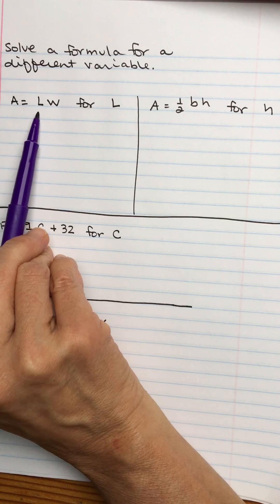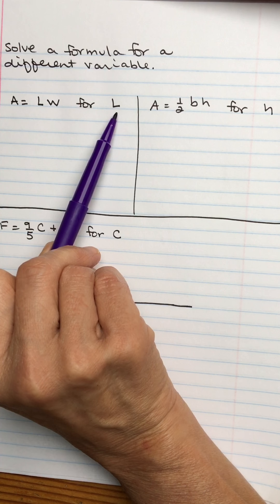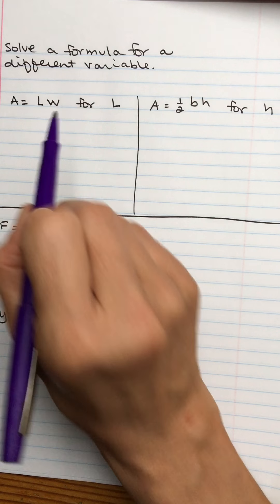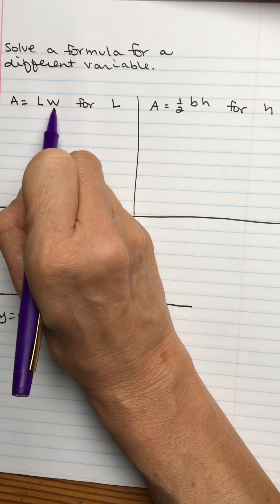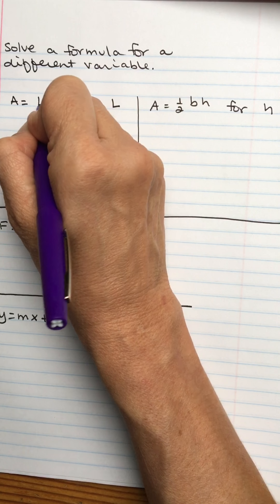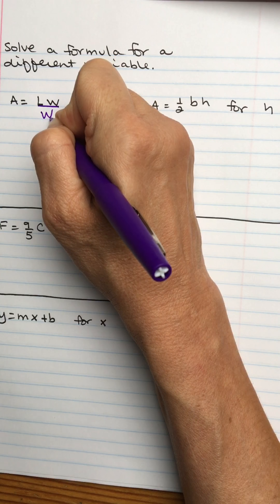Let's start with this first one, A equals L times W. So this is the formula to calculate the area of a rectangle, area equals length times width. Let's say we wanted to solve for length. Since the length and the width are attached to each other with multiplication, to undo that, I would divide.